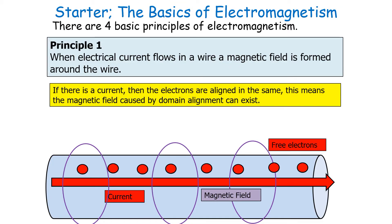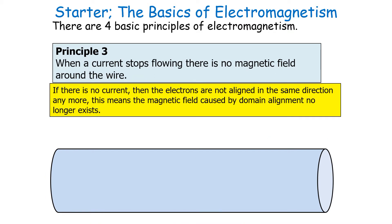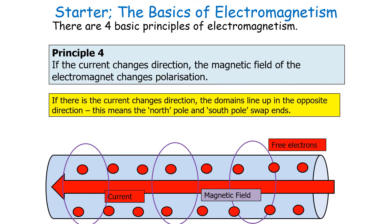Principle 1: When electrical current flows in a wire, a magnetic field is formed around the wire. Principle 2: The stronger the current, the stronger the magnetic field strength of the electromagnet. Principle 3: When a current stops flowing, there's no magnetic field around the wire. Principle 4: If the current changes direction, the magnetic field of the electromagnet changes polarization, so North and South Pole swap ends.